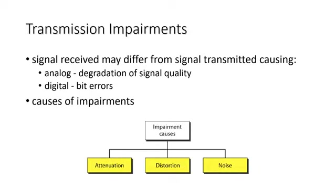Signals travel through transmission media, which are not perfect. The imperfection causes signal impairment, meaning the signal at the beginning of the medium is not the same as the signal at the end. For analog signals, these impairments can degrade the signal quality. For digital signals, bit errors may be introduced such that a binary 1 is transformed into a binary 0 or vice versa. The three causes of impairment are attenuation, distortion, and noise.